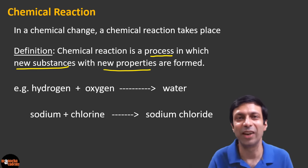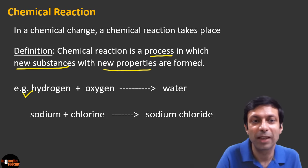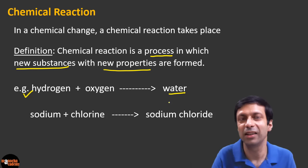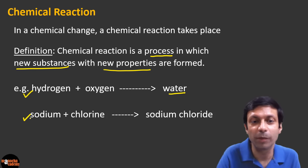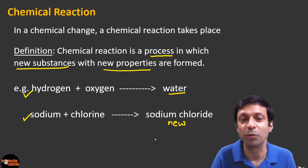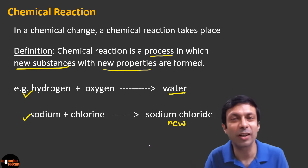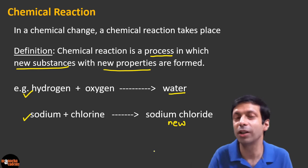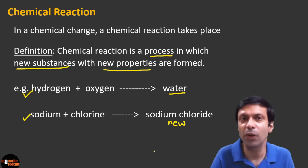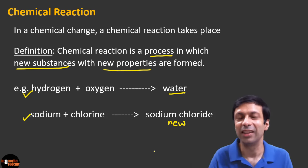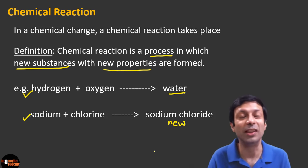Here we have some examples of chemical reactions. For example, hydrogen plus oxygen gives water — water is the new substance formed from hydrogen and oxygen. Similarly, sodium and chlorine combine to get sodium chloride. Water has very different properties from hydrogen and oxygen: hydrogen and oxygen are gases, but water in its normal form is a liquid we drink. A metal sodium combines with a poisonous gas to form sodium chloride — the salt which we eat every day. That's the magic of chemistry: in a chemical reaction, new substances with new properties are formed.